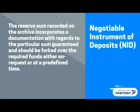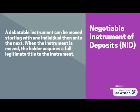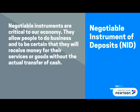The reserve sum recorded on the archive incorporates documentation with regards to the particular sum guaranteed, and should be paid either on request or at a predefined time. A negotiable instrument can be moved from one individual to another. When the instrument is moved, the holder acquires full legal title to the instrument. Negotiable instruments are critical to our economy as they allow people to do business and be certain they will receive money for their services or goods without the actual transfer of cash.